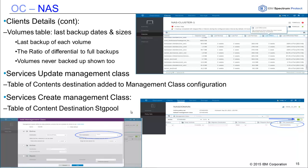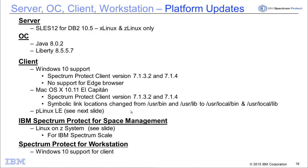The new features in the operations center are ad hoc reporting and NAS visibility. Slide 16 covers the new platforms. On the Spectrum Protect server, we now have SLES 12 for DB2 10.5 on our XLinux and ZLinux servers. On the operations center, we have added Java 8.0.2 and Liberty server 8.557. For the Spectrum Protect client, we've added support for Windows 10 — added in version 7.1.3.2 — with no support for the Edge browser. With Mac OS 10 El Capitan, we added support in 7.1.3.2, and our symbolic link locations have changed from /usr/bin and /usr/lib to /usr/local/bin and /usr/local/lib. We've added support for PLinux LE. For IBM Spectrum Protect for Space Management, we've added support for Linux on Z systems for IBM Spectrum Scale file systems.